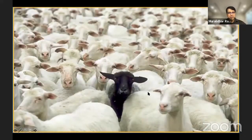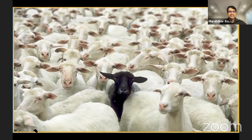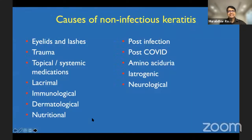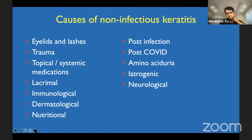I hope this would be as simple as recognizing an odd member out — differentiating from infective keratitis. There are varying causes, right from an innocuous eyelid condition to some neurological conditions, as Dr. Paras mentioned, that can have devastating consequences on the ocular surface.